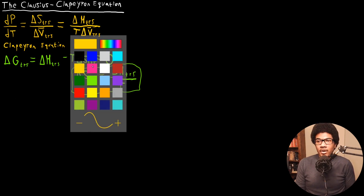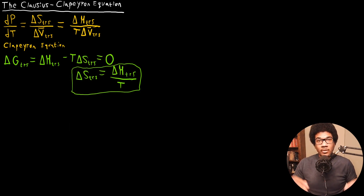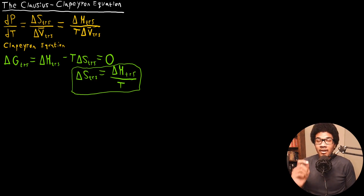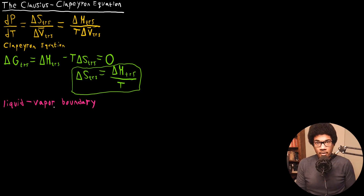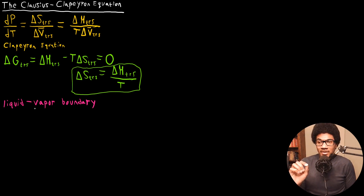The Clausius-Clapeyron equation is looking at a very specific transition. The general Clapeyron equation is general — you can apply it to any point along the phase diagram. The Clausius-Clapeyron equation is specifically looking at liquid-to-vapor transitions, so we're looking at the liquid-vapor boundary — vaporization or condensation types of processes. It applies a very astute approximation in order to get a general expression for the Clapeyron equation at the liquid-vapor boundary.